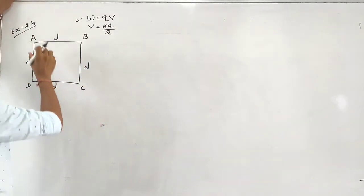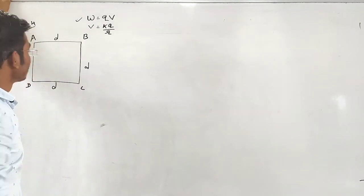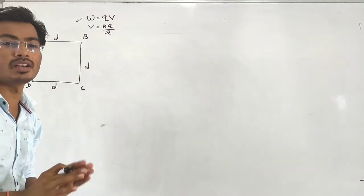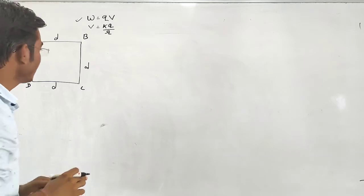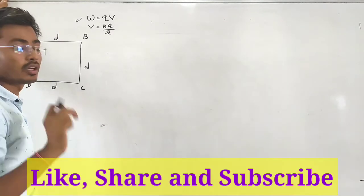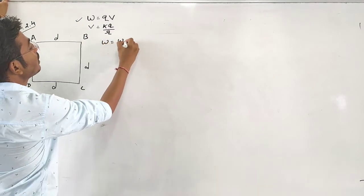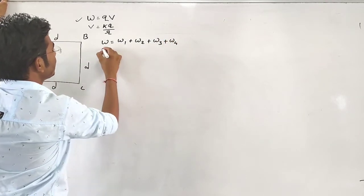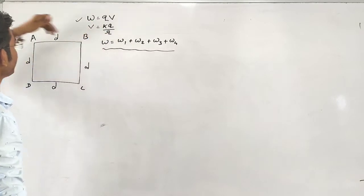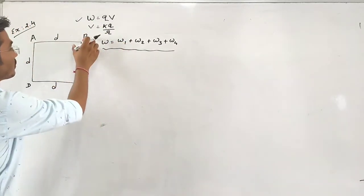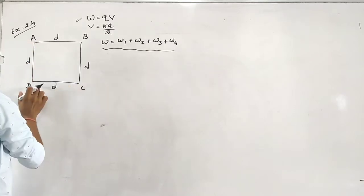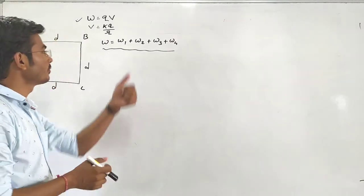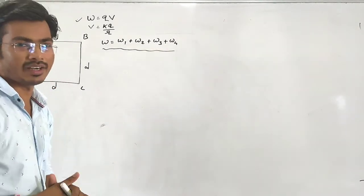Now we have to find out the total work. Total work is equal to W1 plus W2 plus W3 plus W4. We have to find out W1, that means for point A; W2, that means point B; W3, that means point C; and W4, that means point D. We find these step by step.